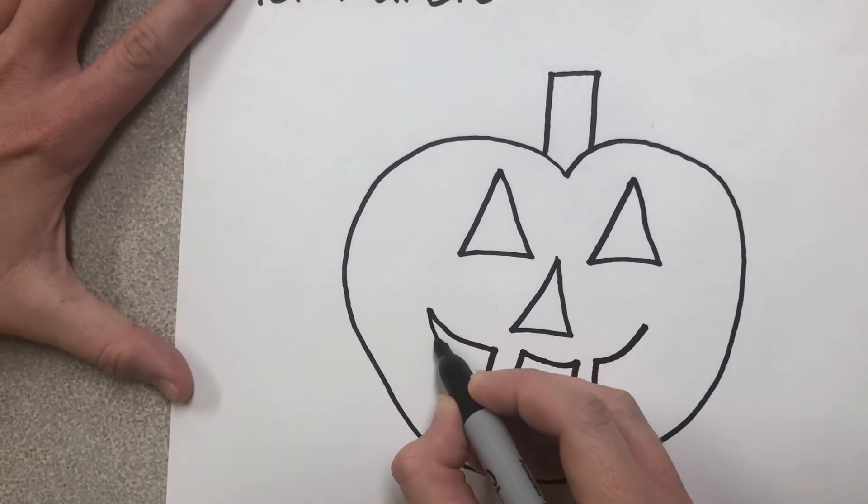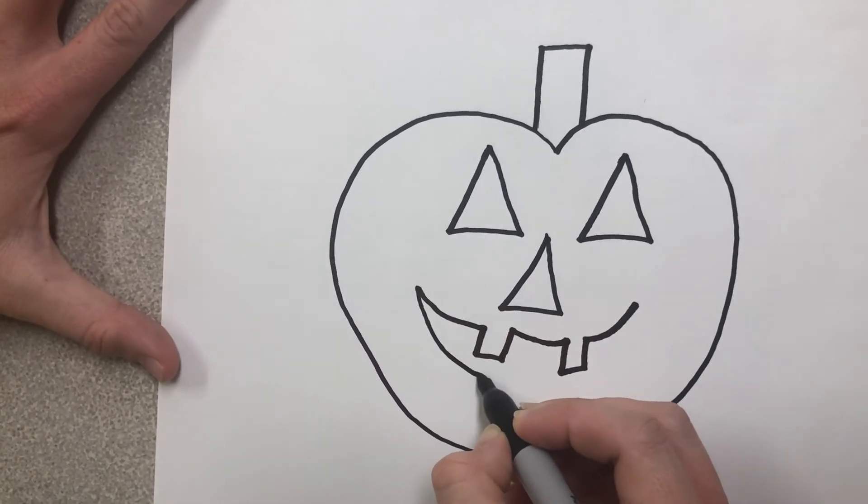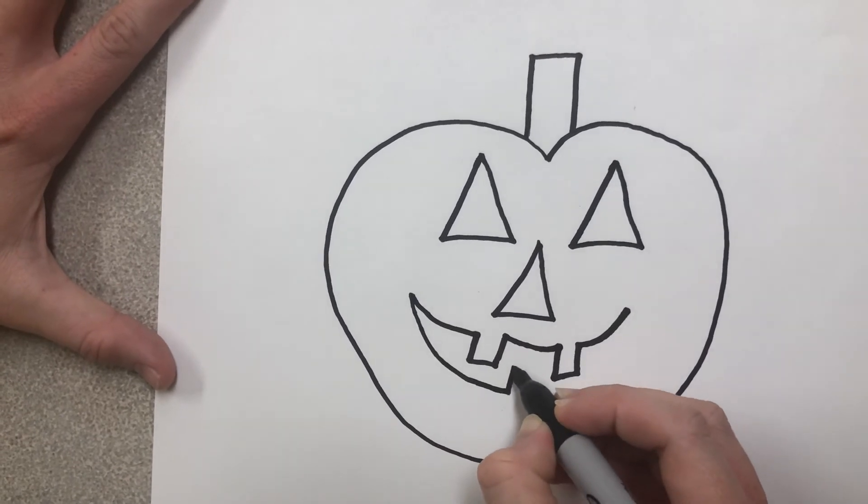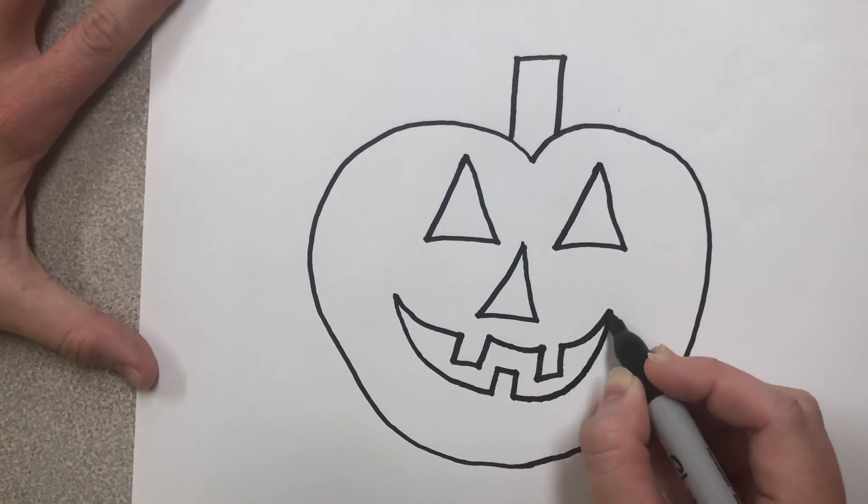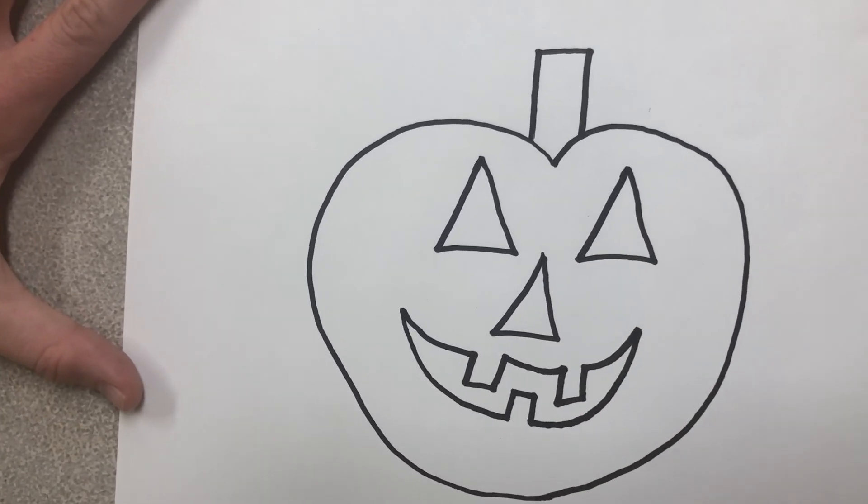Now we have to do the bottom part of our smile. We're going to draw down, stop, draw a tooth, and then continue up and connect at the end. Ta-da!